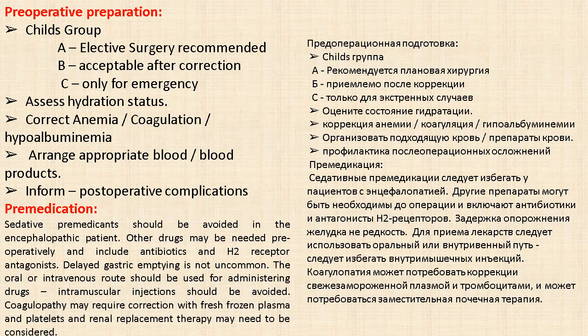Preoperative preparation includes optimizing hydration status, correcting anemia, managing coagulation, and arranging appropriate blood products. Patients should be informed of postoperative complications. Sedative premedication should be avoided in the encephalopathic patient. Other drugs that may be needed preoperatively include antibiotics and H2-receptor antagonists. Delayed gastric emptying is not uncommon. The oral or intravenous route should be used for administering drugs, and intramuscular injections should be avoided.